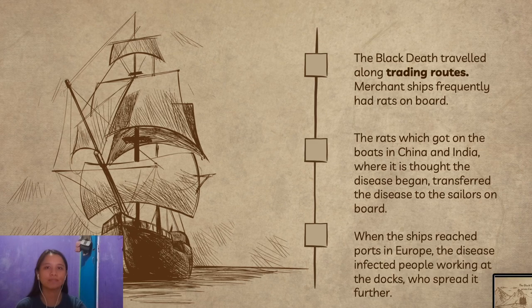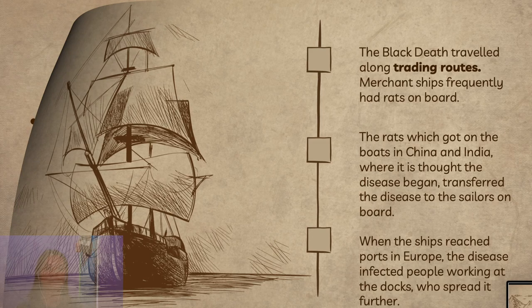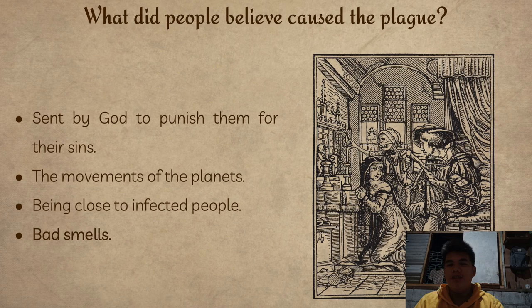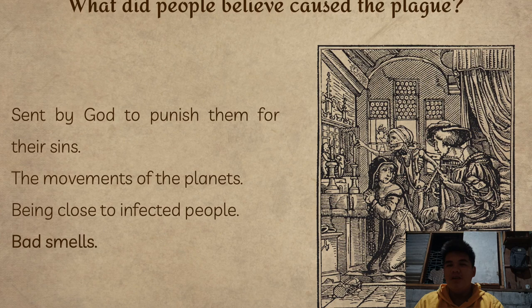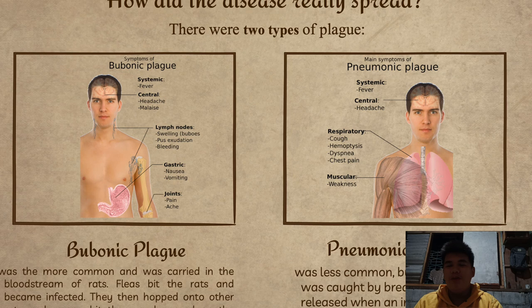The plague continued to travel through Asia, eventually hitting major cities. What did people believe caused the plague? They believed it was sent by God to punish them for their sins, caused by the movement of planets, being close to infected people, or because of bad smells. How did the disease really spread?